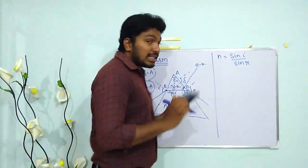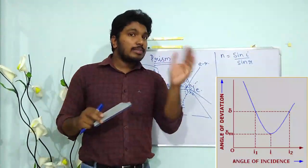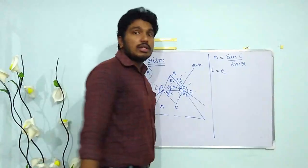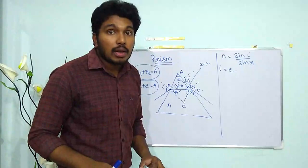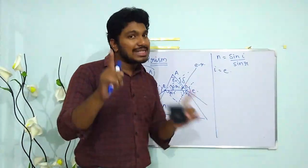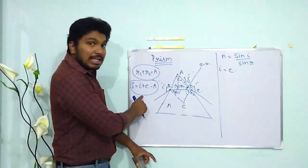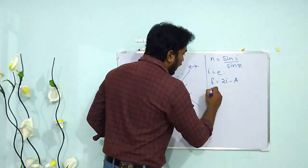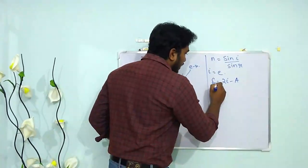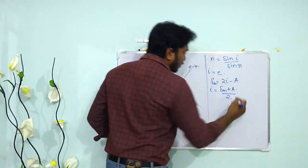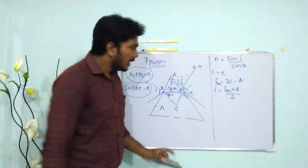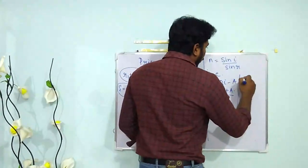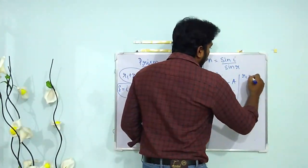At the angle of minimum deviation, the angle of incidence and the angle of emergence are equal. At minimum deviation we can write delta = 2i − A, so i = (δm + A) / 2. Also, since i = e, it follows that r1 = r2, and from r1 + r2 = A we get 2r = A, so r = A/2.